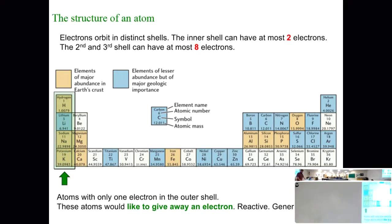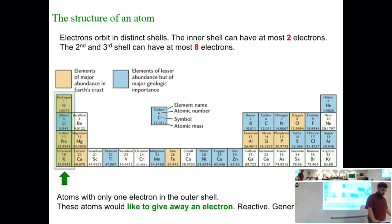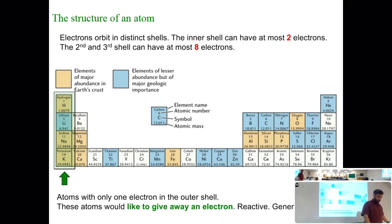That's where equation balancing comes from. Sodium and potassium want to get rid of one electron to become stable. Calcium and magnesium want to get rid of two electrons.